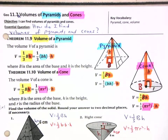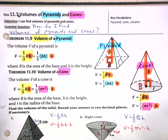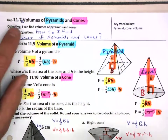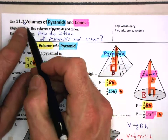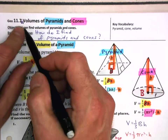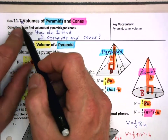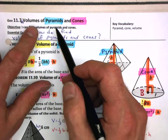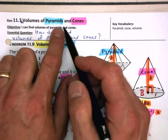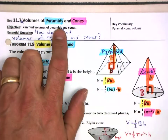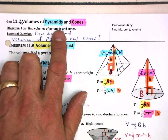Welcome to 11.7A. We're looking at volumes of pyramids and cones.